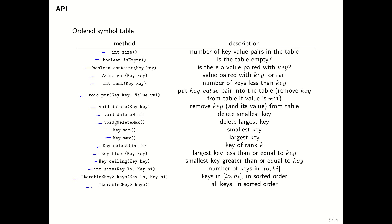The keys and values in the ordered symbol table API are generic types, but unlike the basic symbol table API, the keys here need to be comparable — because only then can you implement the ordered operations. So keep that in mind: in the ordered symbol table API, the keys must be comparable.